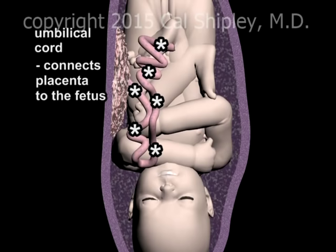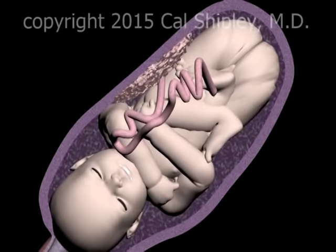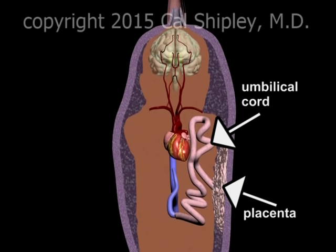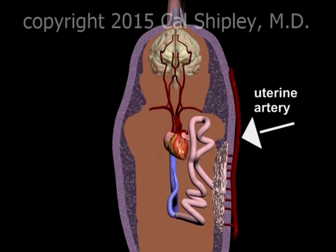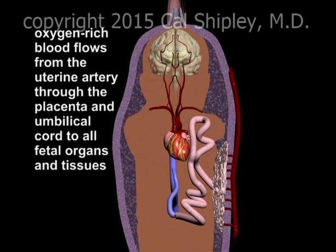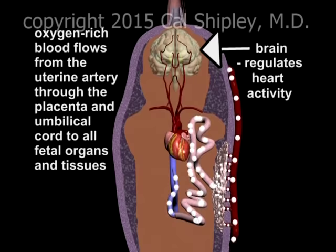Connecting the placenta to the fetus is the umbilical cord, containing the umbilical arteries and the umbilical vein. Rotating the uterus 180 degrees and switching to an internal view of the fetus reveals the fetal heart, with the umbilical cord connecting the placenta to the fetal circulatory system. The maternal uterine artery sends branches through the uterine wall into the placenta. Oxygen and nutrient-rich blood flows from the uterine artery through the placenta and umbilical cord to all fetal organs and tissues — this, of course, includes the brain, which regulates fetal cardiac activity.